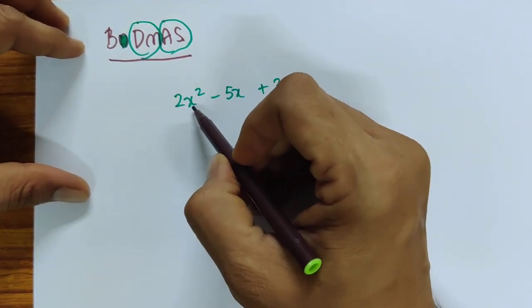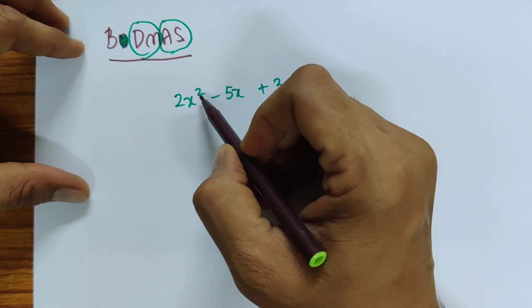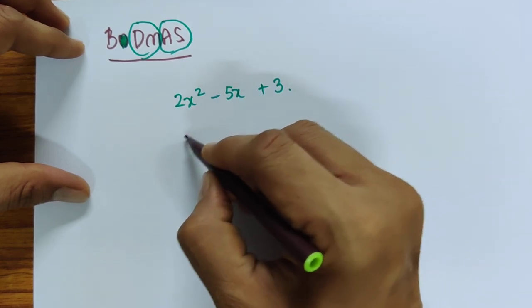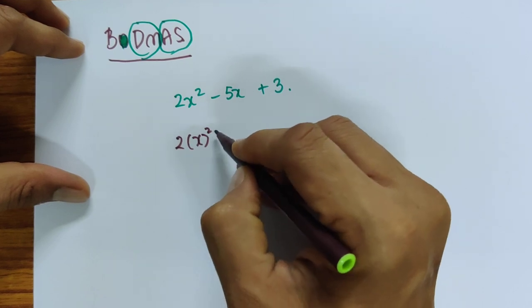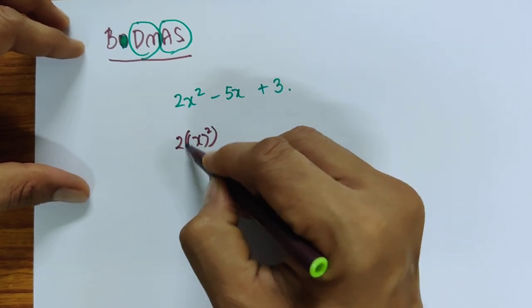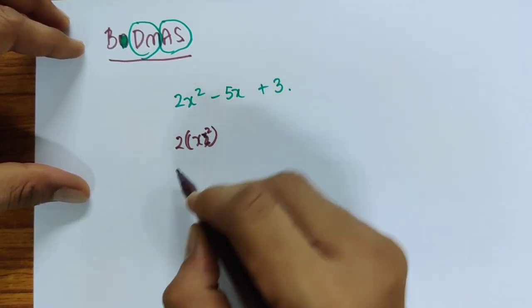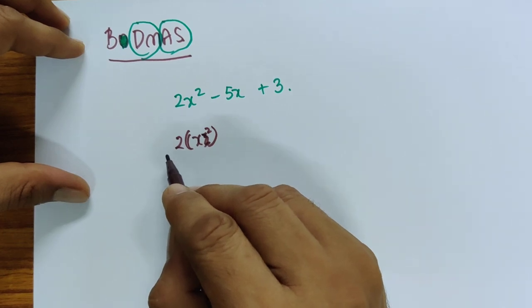It's not I am multiplying 2 with x and doing a square. Otherwise I would need to write it as x square in brackets, first do the square then multiply by 2 and so on.